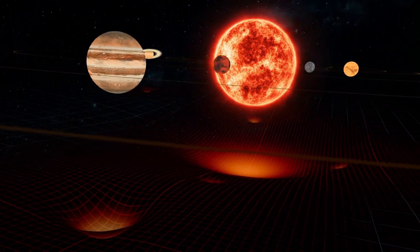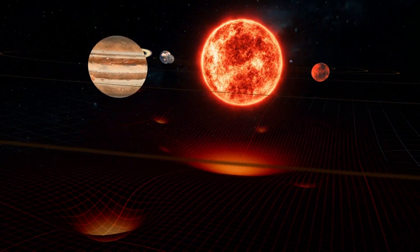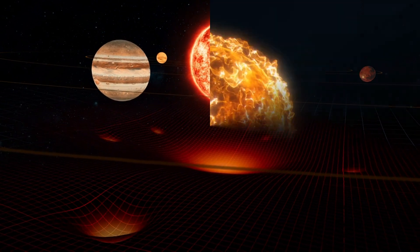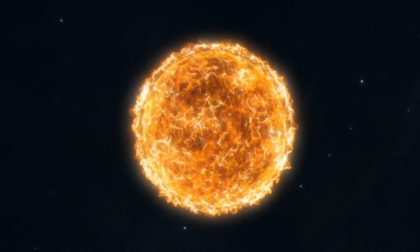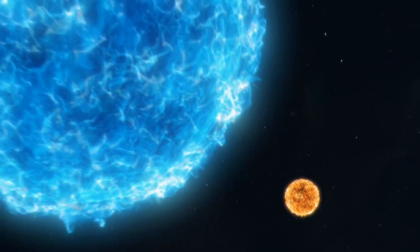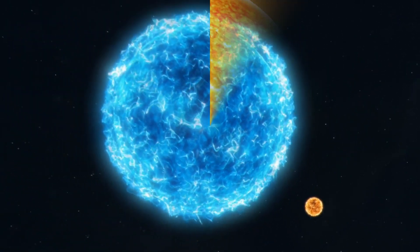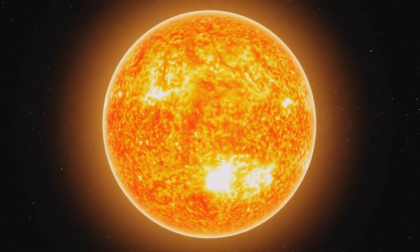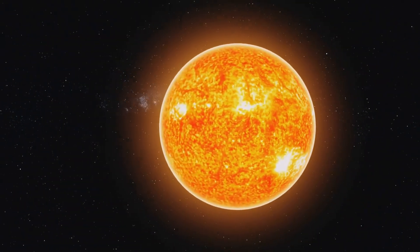Imagine a star so immense it could stretch all the way to Jupiter if it replaced our Sun. At around 10 million years old, Betelgeuse is relatively young compared to our 5 billion-year-old Sun. However, its massive size means it burns through its fuel rapidly, predicting a shorter lifespan.